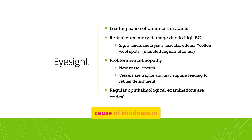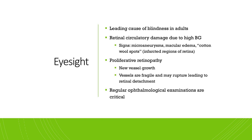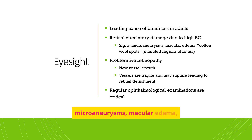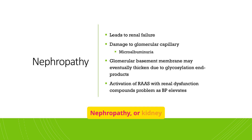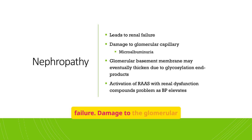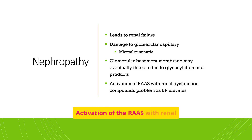Diabetes is a leading cause of blindness in adults. Retinal circulatory damage due to high blood glucose can lead to microaneurysms, macular edema, and proliferative retinopathy. Regular ophthalmological examinations are critical. Nephropathy, or kidney damage, can lead to renal failure. Damage to the glomerular capillary and microalbuminuria are early signs, and activation of the RAS with renal dysfunction compounds the problem.